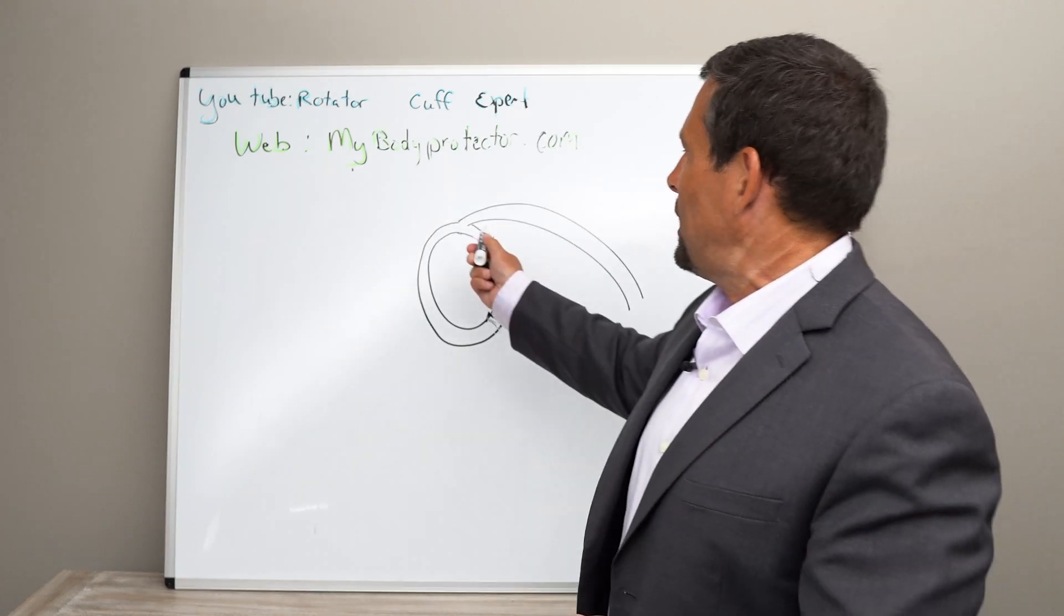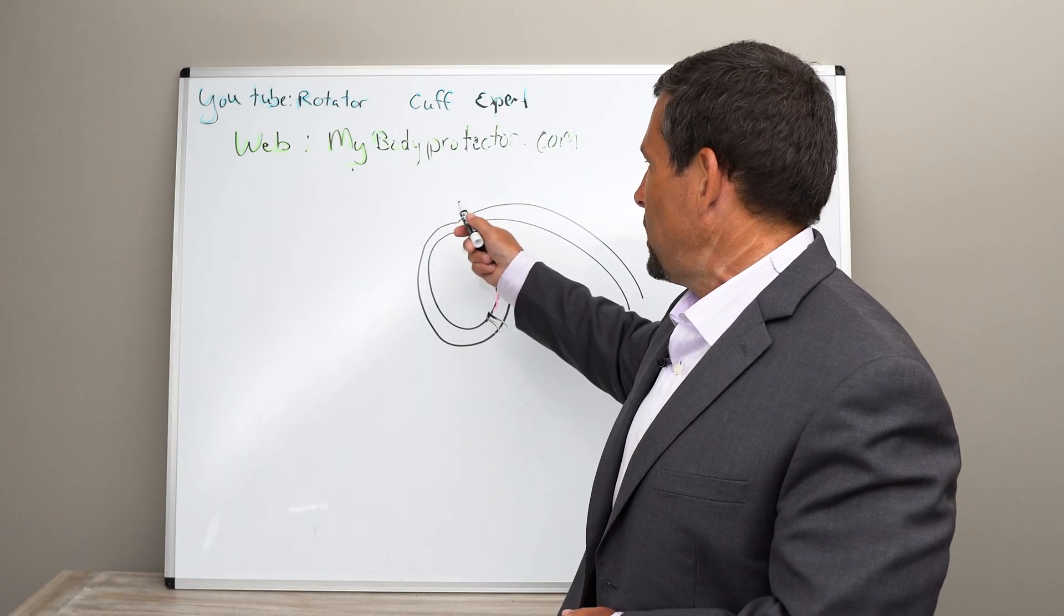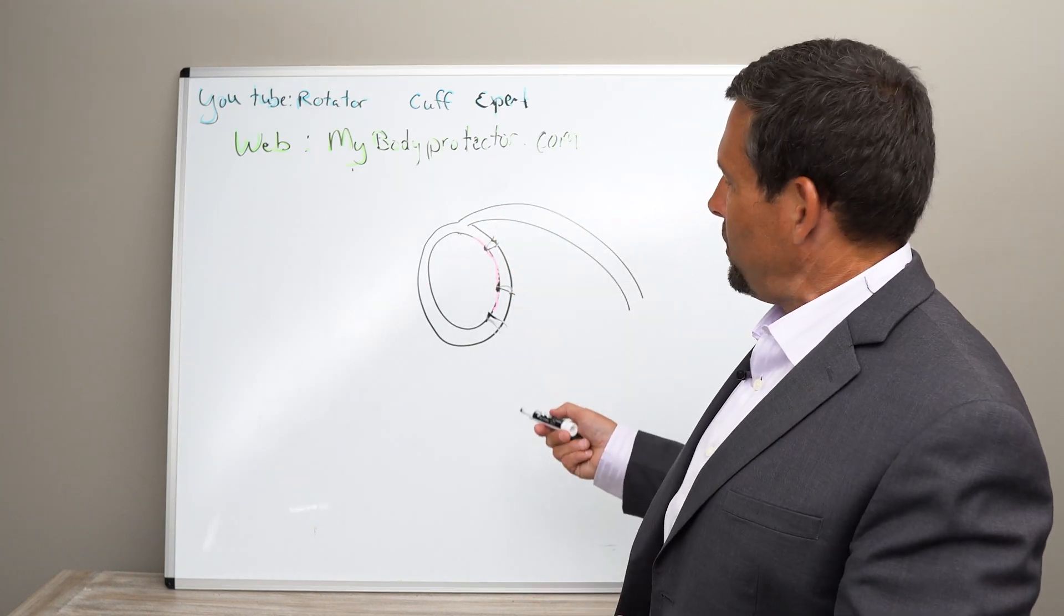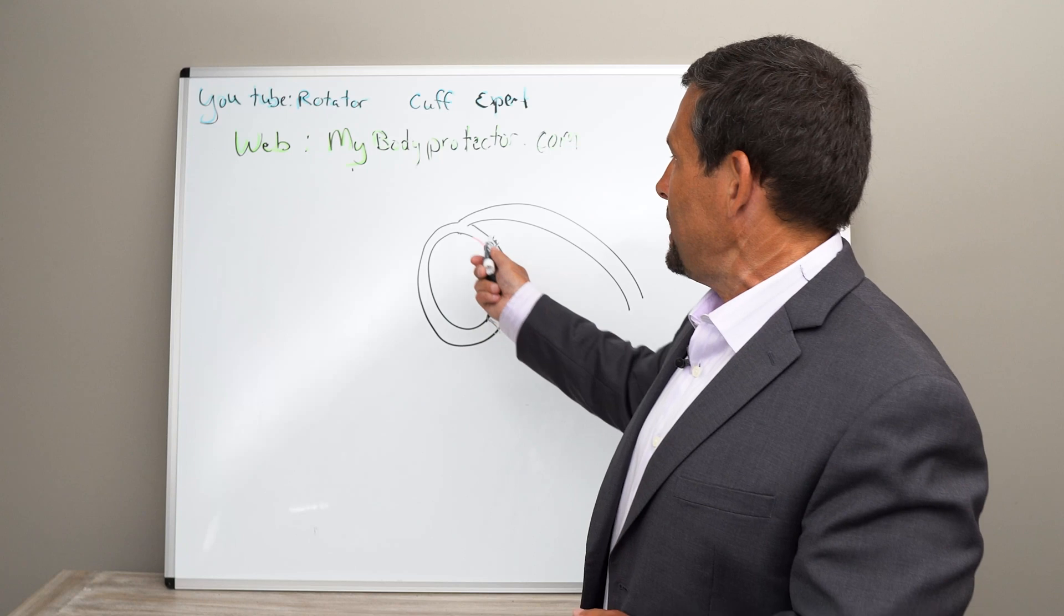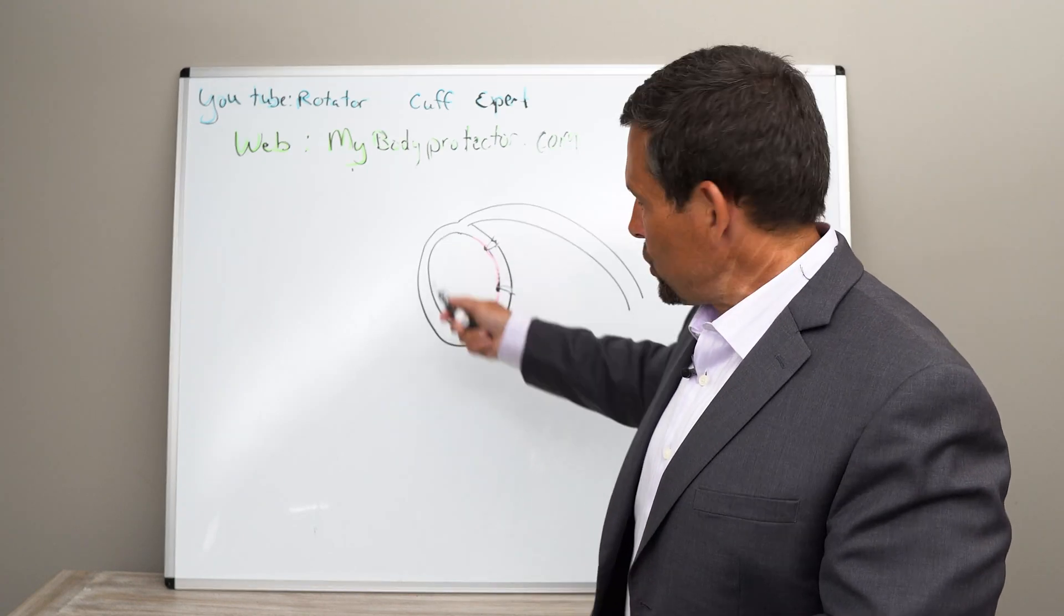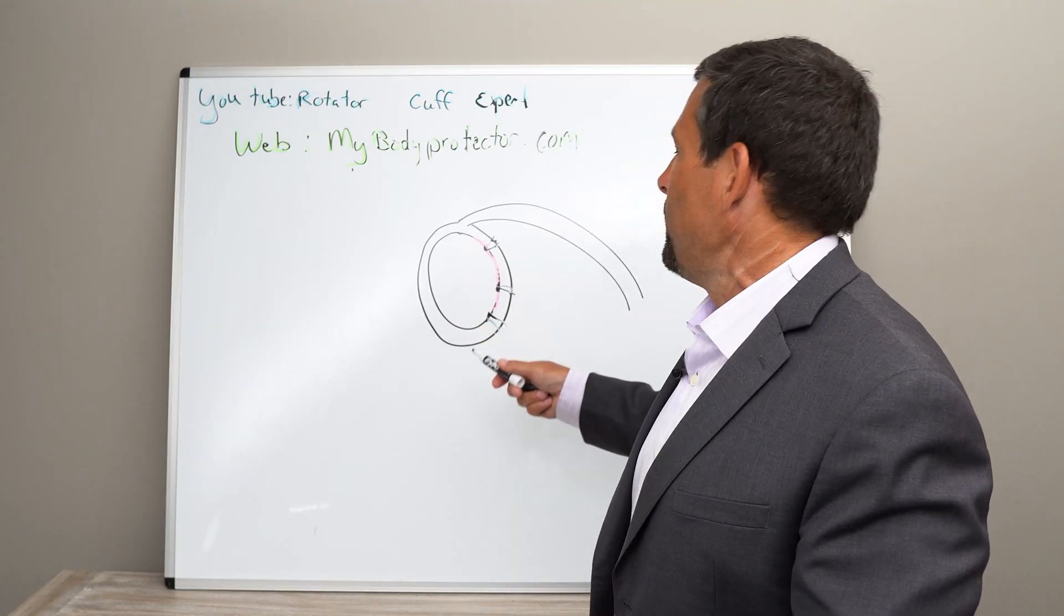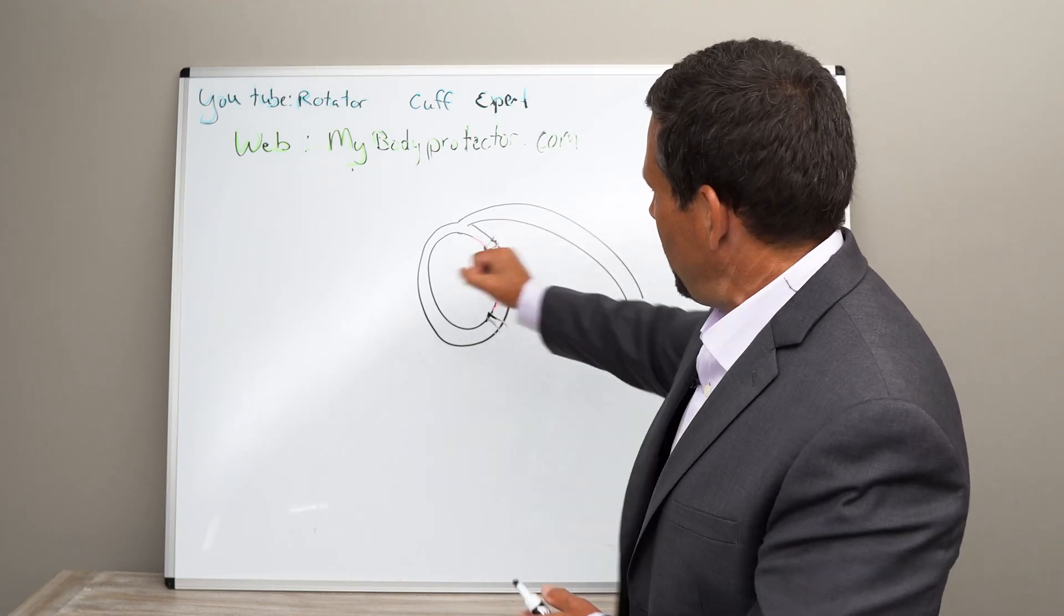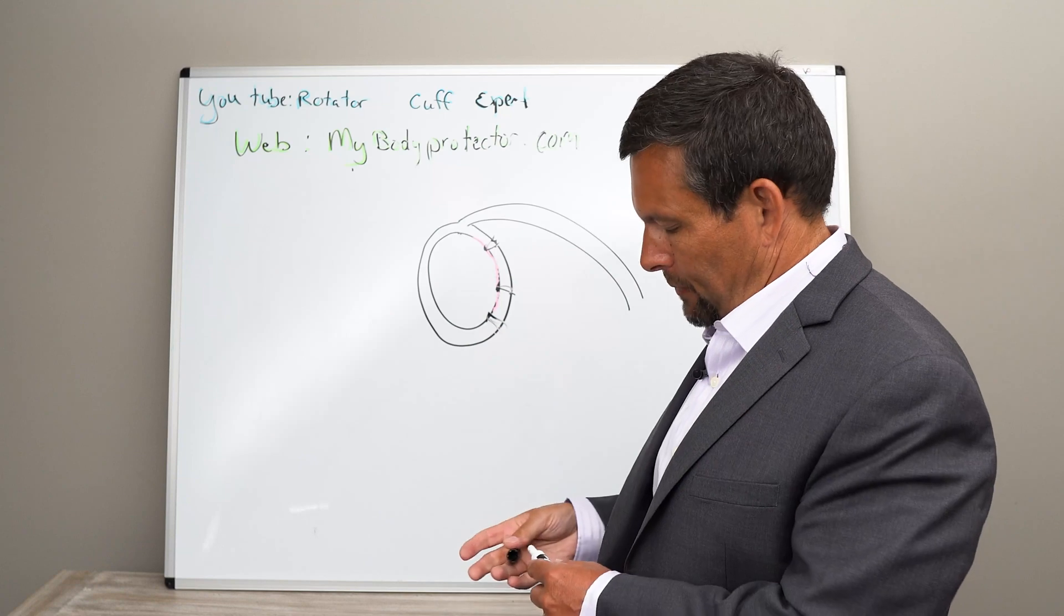If we go up here higher, we call that a SLAP tear, superior labral tear anterior to posterior. But if we have a dislocation, we would have a Bankart tear. Sometimes it can extend into the SLAP portion or it can extend farther in. But in general, the classic dislocation is this way out the front. We go in there, clean that up and reattach it.